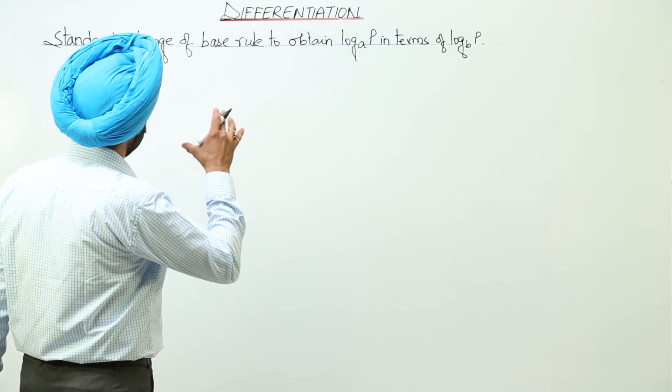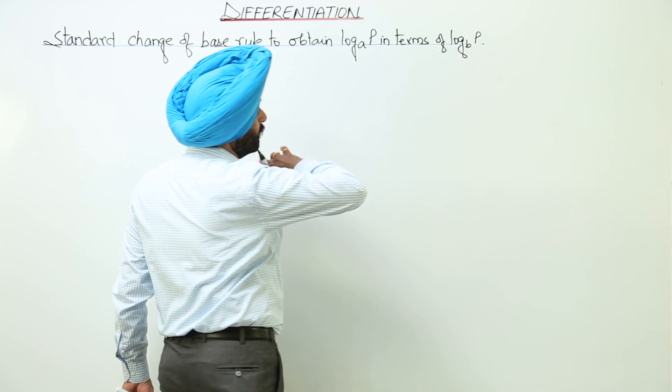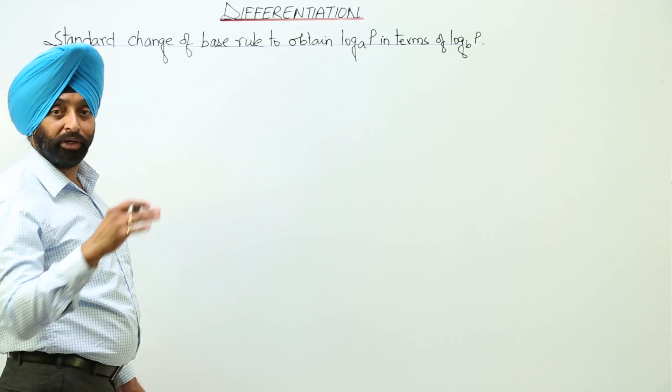The property is change of base rule to obtain log with base a of p in terms of log with base b of p.